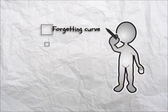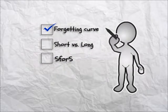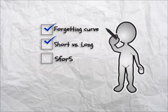We'll cover three things. First, we'll explain about the forgetting curve and how your memory diminishes over time. Next, we'll explain the difference between short-term memory and long-term memory.